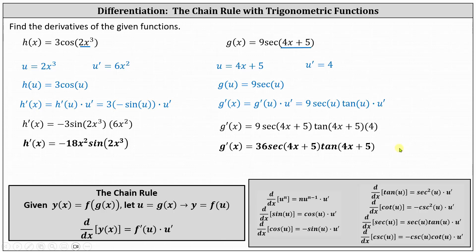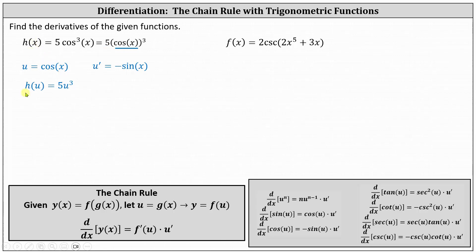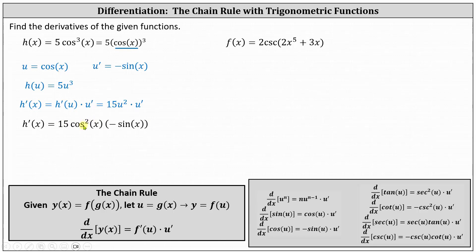Let's take a look at two more examples. We have h of x equals 5 cosine cubed of x. We need to be careful here — this means we have three factors of cosine x. Let's write this as 5 times the cube of cosine x. In this form, the inner function is cosine x, so u equals cosine x and u prime equals negative sine x. We can write h as a function of u as h of u equals 5u cubed. This indicates h prime of x equals h prime of u times u prime, where h prime of u equals 15u squared times u prime. Substituting, h prime of x equals 15 times cosine squared x times negative sine x, which simplifies to negative 15 cosine squared x times sine x.